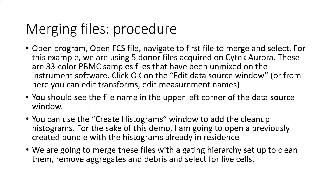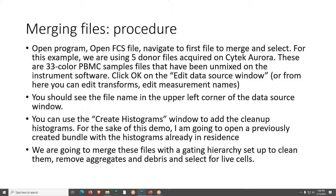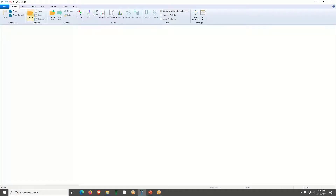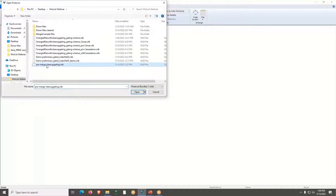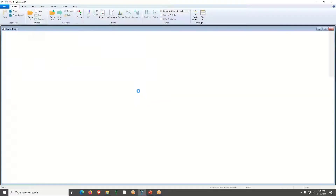The next window is the Create Histograms window, where you can add cleanup histograms. For this demo, I'm going to open a previously created bundle with histograms already in place. We're going to merge these files with a gating hierarchy set up to clean them — removing aggregates and debris and selecting for live cells. Now I'm going to come to WinList and open that protocol bundle.